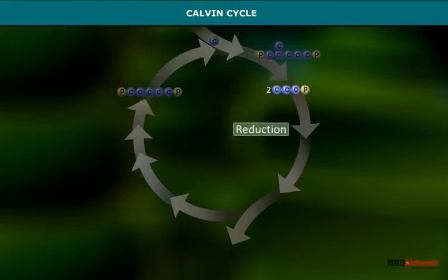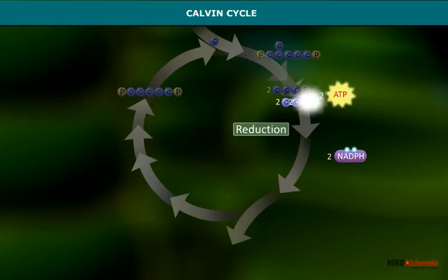The second step is a sequence of reactions using electrons from NADPH and some of the ATP to reduce carbon dioxide.